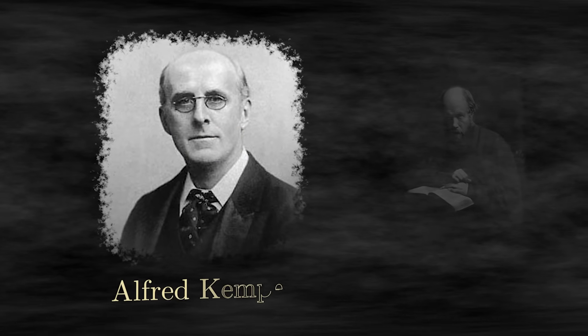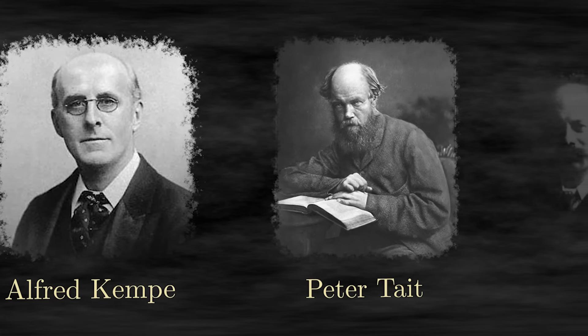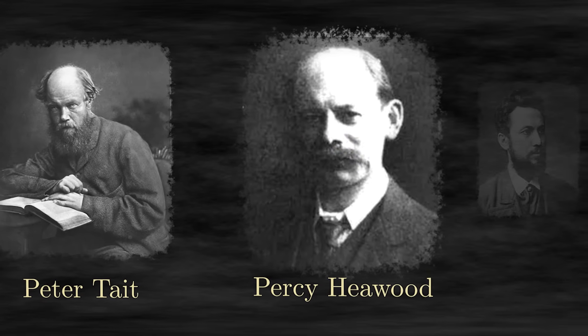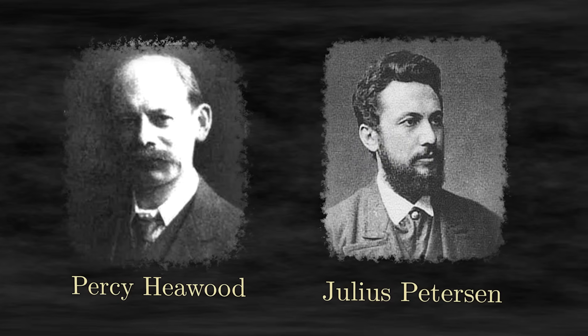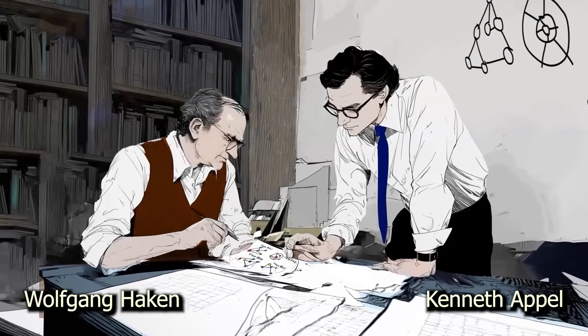Guthry had no doubt that the four-color theorem was true, but proving it would turn out to be very difficult, and he didn't know how to do it. In fact, it would take over 150 years before a valid proof was finally completed. However, until then, there were several times when we thought we had a solution, only to find out later that there was a mistake. In 1879, Alfred Kemp published what was hailed as a brilliant proof. A year later, Peter Tate gave a different one. Both were celebrated, but both were wrong, and no one realized it for over a decade until Percy Haywood found a flaw in Kemp's argument. A year later, Julius Peterson did the same to Tate's. The once-again-unproven theorem remained unproven for another 85 years, when Kenneth Appel and Wolfgang Haken announced that they had solved it.